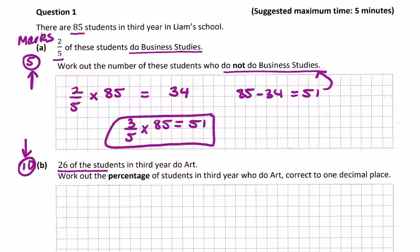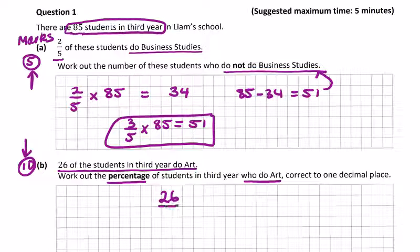26 of the students in third year do art. Work out the percentage of students in third year who do art, correct to one decimal place. There are 85 students in third year. Go back and read the question carefully. So 26 do art, 26 out of 85 do art. How do you get percentages? You did it in primary school. Multiply by 100.